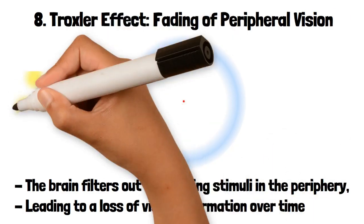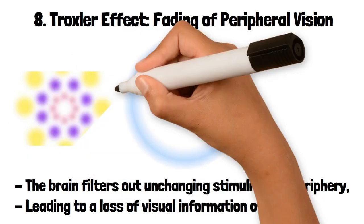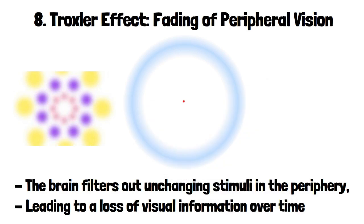For example, if you stare at a fixed point on a colorful image for an extended period, the colors in your peripheral vision may begin to fade or disappear altogether. This effect demonstrates how the brain prioritizes certain visual information over others.